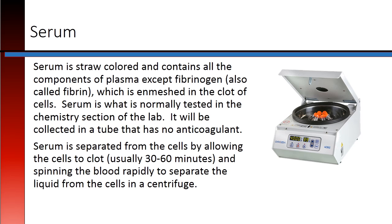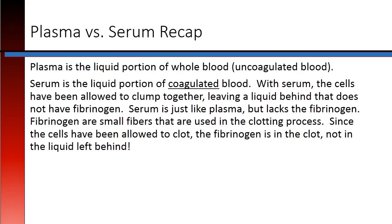Serum is what is normally tested in the chemistry section of the lab. It will be collected in a tube that has no anticoagulant. Serum is separated from the cells by allowing the cells to clot, usually for 30 to 60 minutes, and then spinning the blood rapidly in a centrifuge. Plasma is the liquid portion of whole blood or uncoagulated blood; serum is the liquid portion of coagulated blood. With serum, the cells have been allowed to clump together, leaving a liquid behind that does not have fibrinogen. Fibrinogen are small fibers used in the clotting process — since the cells have been allowed to clot, the fibrinogen is in the clot, not in the liquid left behind.